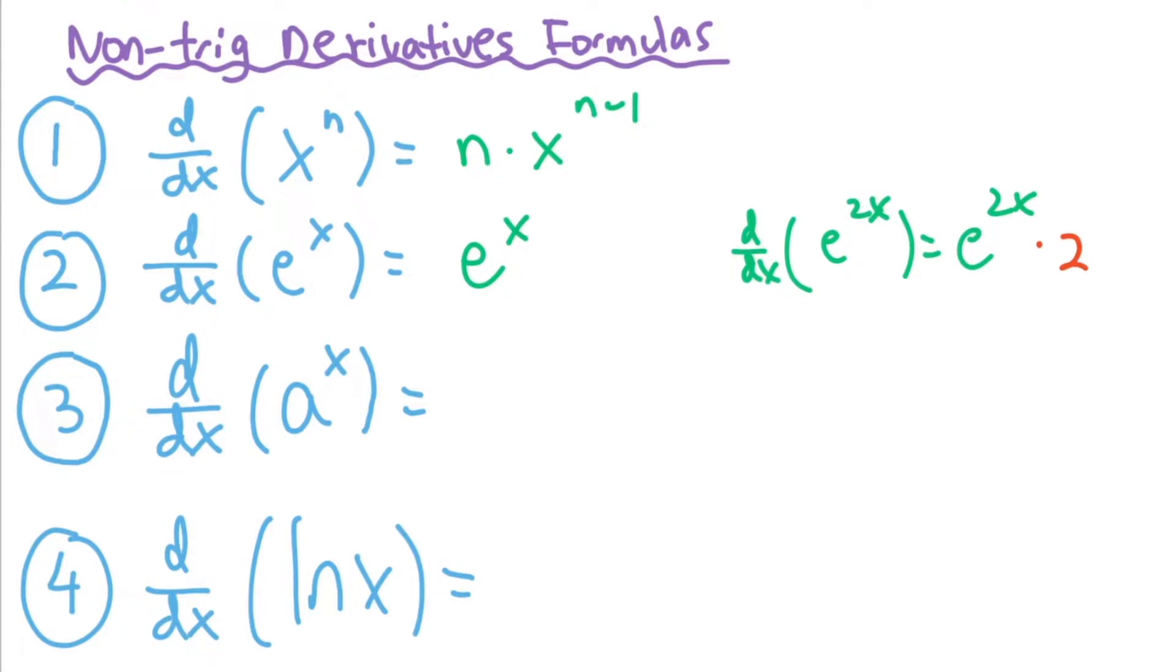So you got to multiply by 2. But in general, when you have a derivative of e to the x, like a function, it's going to be the same function and then chain rule if it applies.